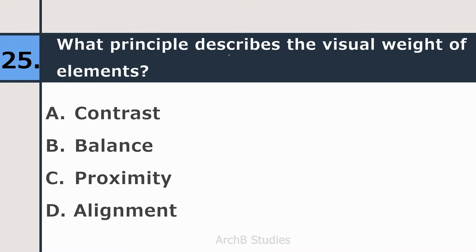Twenty-fifth question: what principle describes the visual weight of elements — contrast, balance, proximity, or alignment? The right answer is Balance.